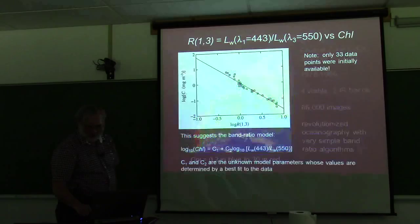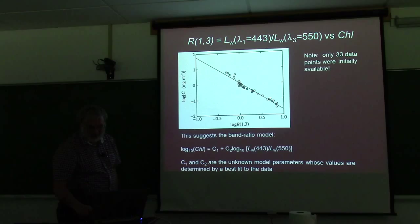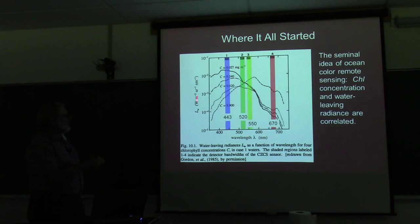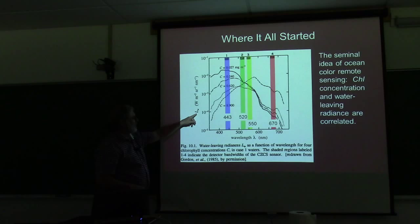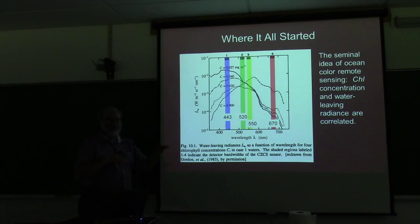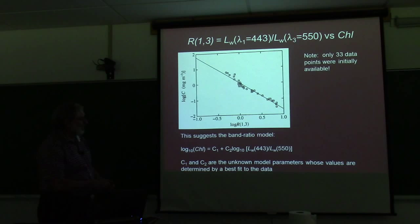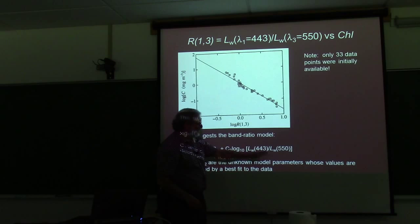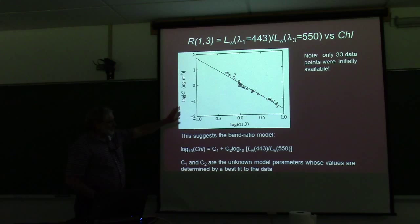Why did they use LW? That's just the way these data were — this is actually airborne data, flying over and measuring LU upwelling radiance, possibly with some atmospheric correction applied. Basically, they had a radiance measurement, so that's what they plotted. Very quickly, people realized we need to use reflectances rather than radiances themselves. But for a historical paper from 40 years ago, that's what they happened to use. Nowadays we use reflectances.